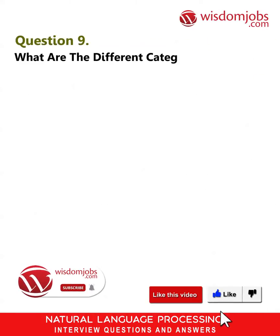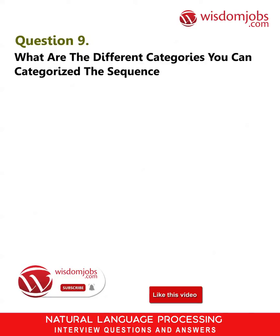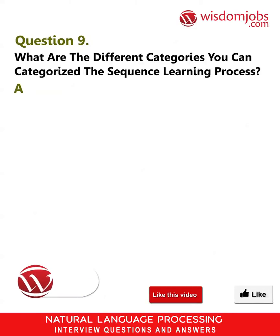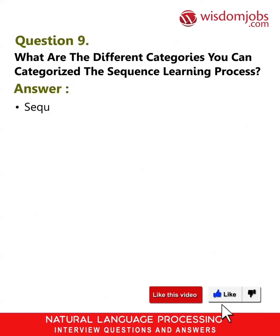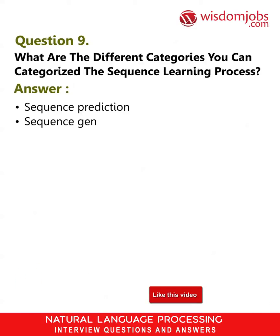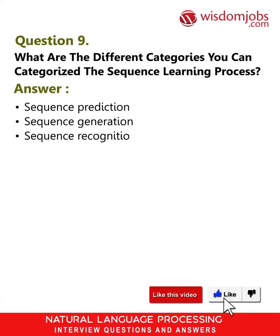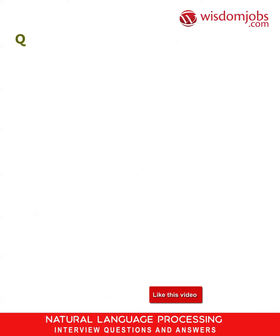Question 9: What are the different categories you can categorize the sequence learning process? Answer: Sequence prediction, sequence generation, sequence recognition, and sequential decision.